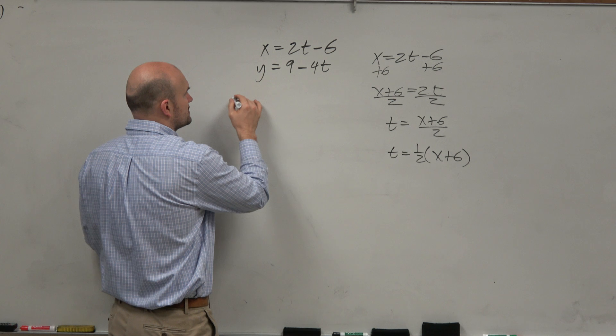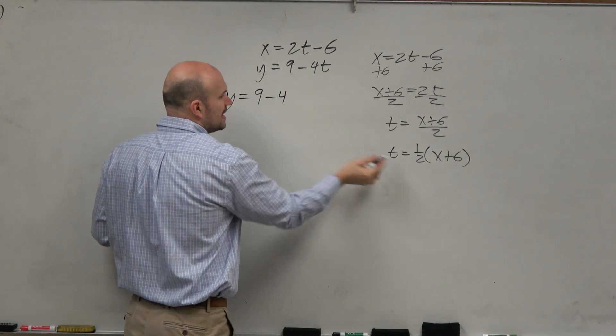But now I know the value of t. And again, I want my equation y to just be in terms of x. I don't want t. That's the eliminating the parameter part. So I'm going to do 9 minus 4. I'm just going to use this version. Actually, no, I'll use this version.